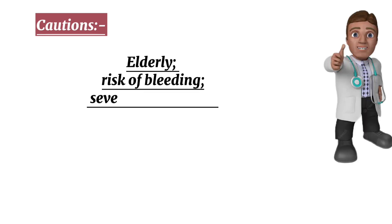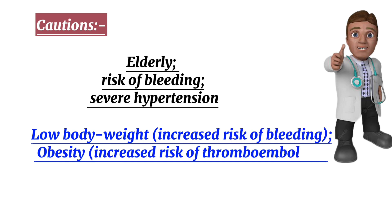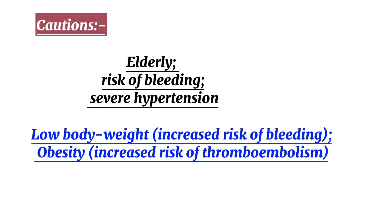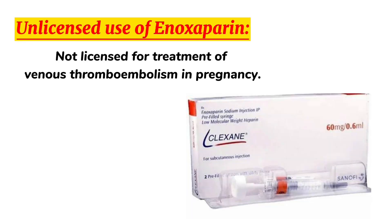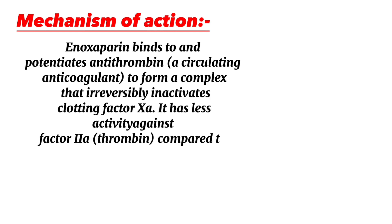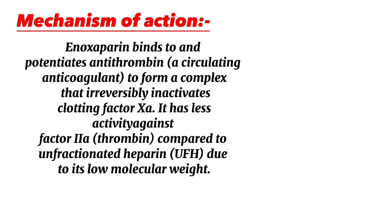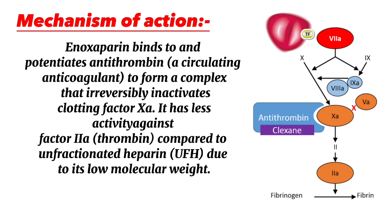Cautions include: elderly patients at risk of bleeding, severe hypertension, low body weight with increased risk of bleeding, and obesity with increased risk of thromboembolism. Enoxaparin is not licensed for treatment of venous thromboembolism in pregnancy. Regarding mechanism of action: enoxaparin binds to and potentiates antithrombin, a circulating anticoagulant, forming a complex that irreversibly inactivates clotting factor Xa. It has less activity against factor IIa (thrombin) compared to unfractionated heparin due to its low molecular weight.